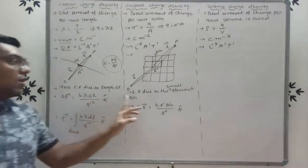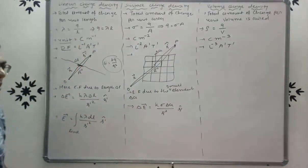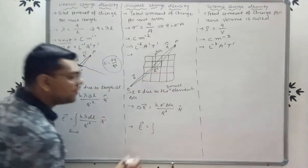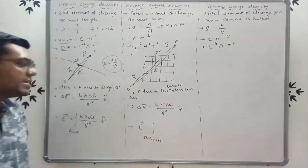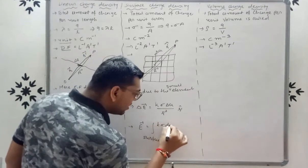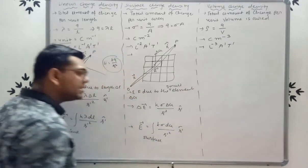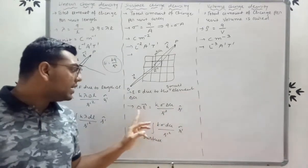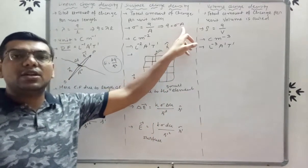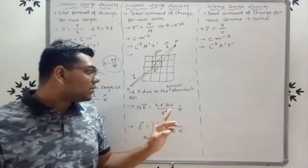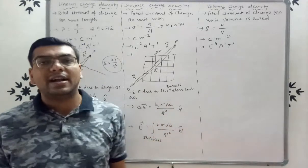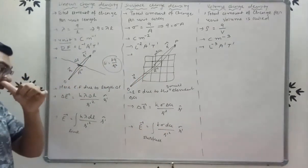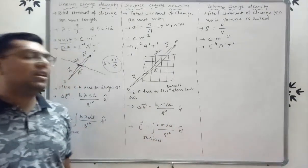To find the total electric field due to the surface, we take the surface integration: E = ∬ K·σ·dA / R'² · R̂'. This is a surface integral because the charge is distributed over a surface.